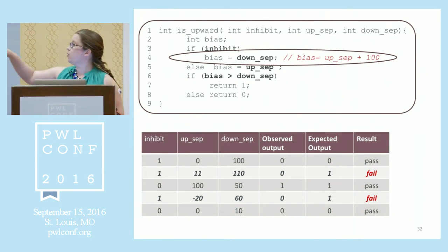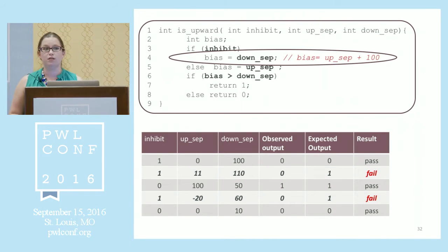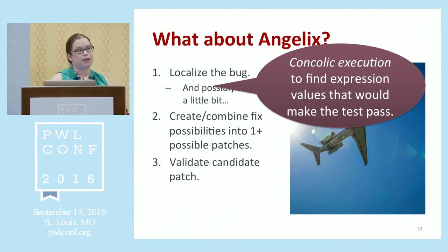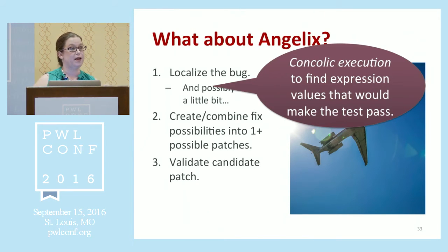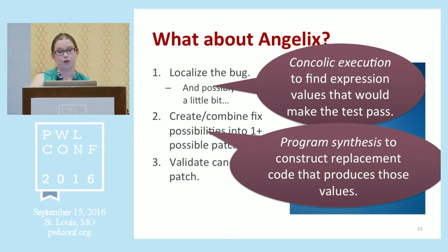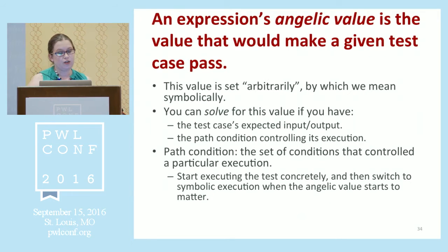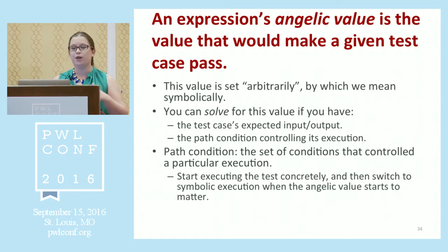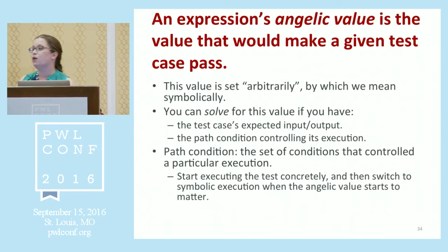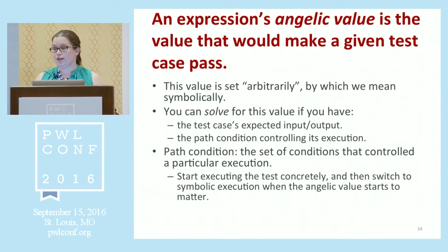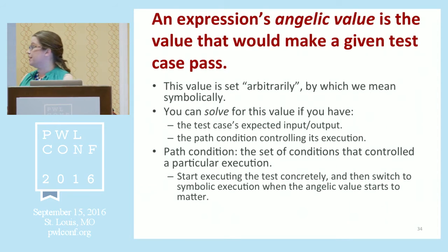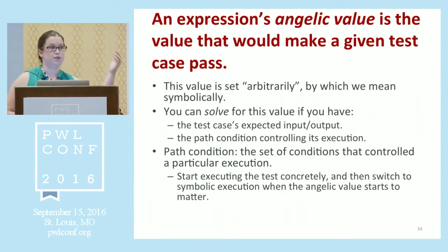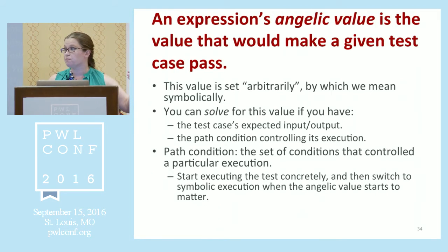There are two major things that Angelix does to fix that line. It's going to say whatever bias is being assigned to is wrong — so let's figure out what it should be instead. It first uses guided symbolic or concolic execution to find expression values that will make the test pass, and then synthesis to construct replacement code that produces those values. The name Angelix comes from the idea of the angelic value: an expression's angelic value is the value that would make a given test case pass if the expression had that value when executed. By arbitrarily setting that value, we actually just mean symbolically — you solve for the symbolic value.